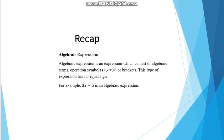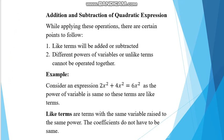You have read in Book 1 what algebraic expressions are. An expression which consists of algebraic terms, operation symbols, or brackets is an algebraic expression. This type of expression has no equal sign. For example, 3x − 5 is an algebraic expression.